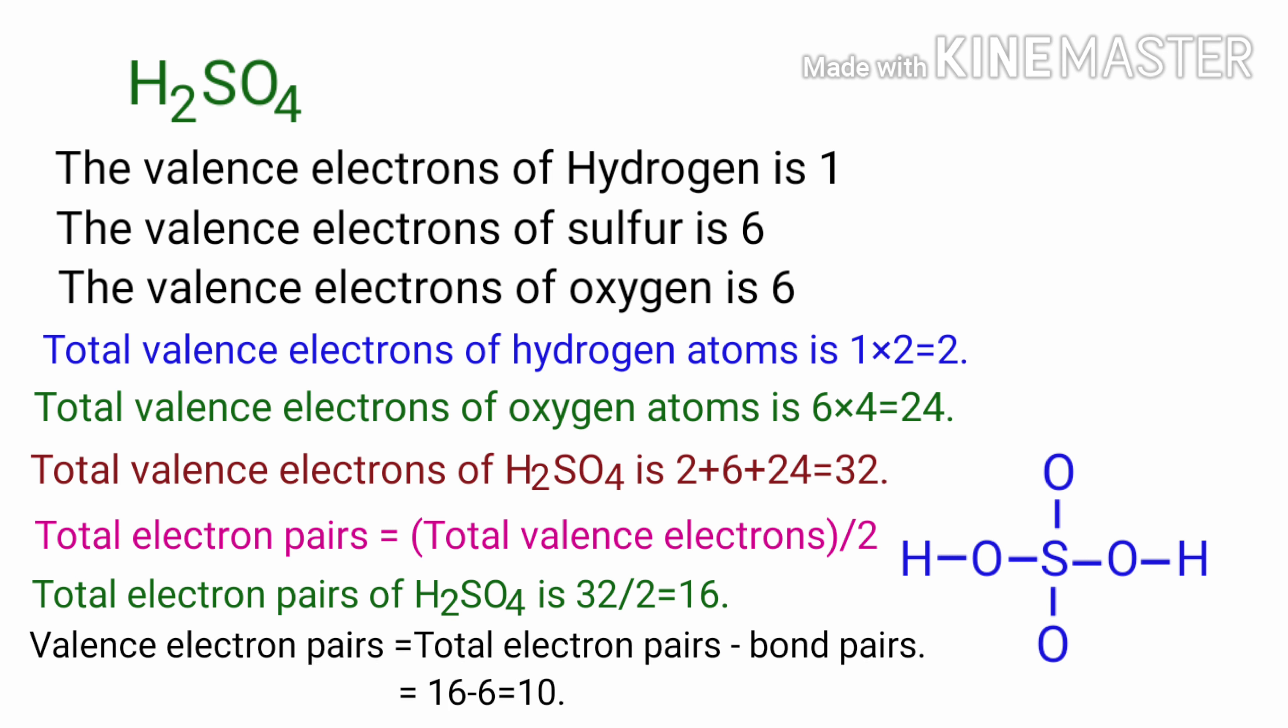Therefore, valence electron pairs is equal to total electron pairs minus bond pairs, that is 16 minus 6, that is equal to 10.